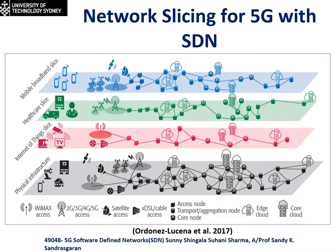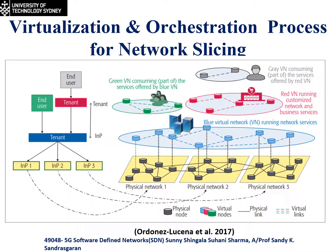An example of network slicing is given, showing three different slices — mobile network, healthcare, and Internet of Things — over the physical infrastructure of an organization. Virtualization is a key process for network slicing as it enables effective resource sharing among slices. It is the abstraction of resources using appropriate techniques. Orchestration is defined as the continuing process of selecting resources to fulfill client service demands in an optimal manner. The infrastructure provider owns and provides the physical network, while a tenant leases virtual resources to provide network services to its users, and end-users consume those services.